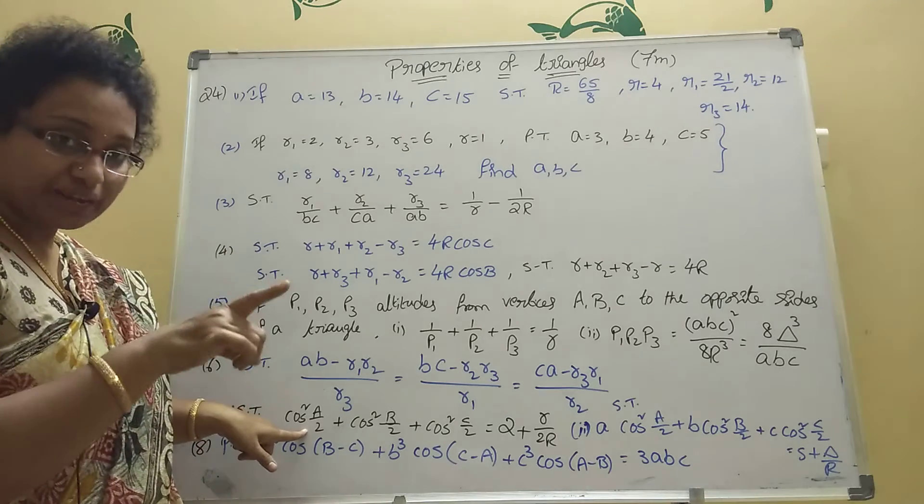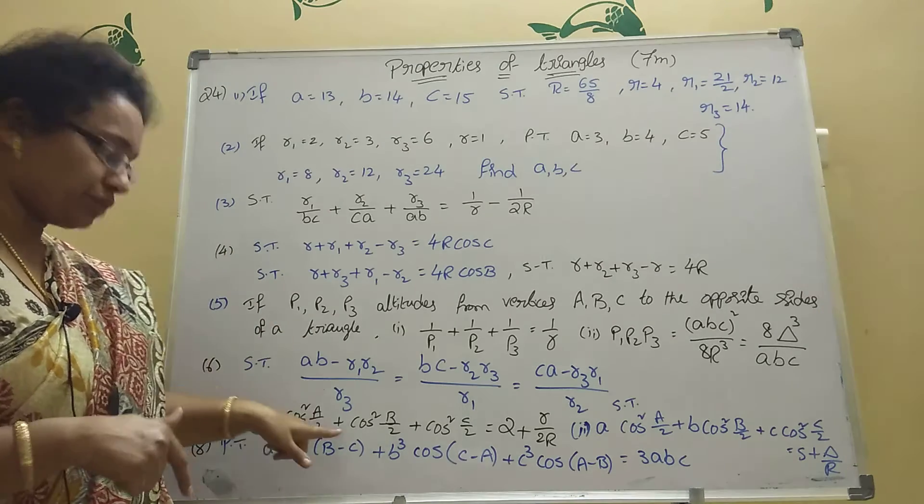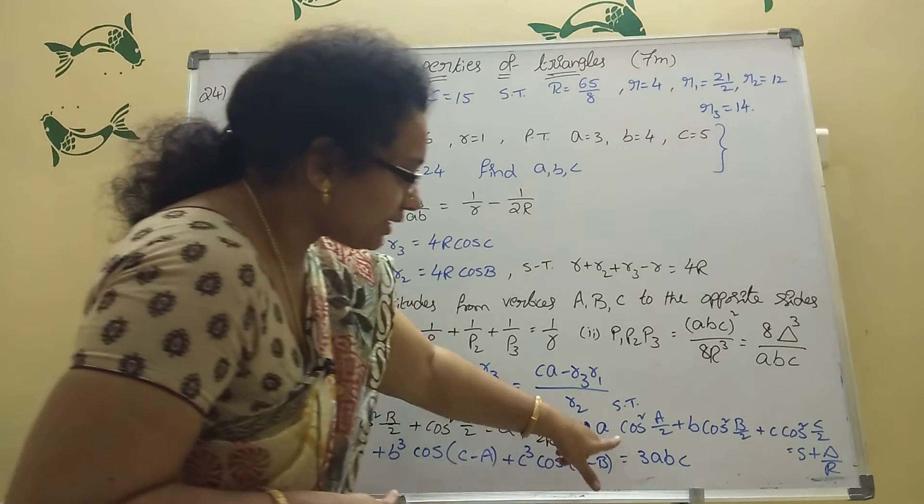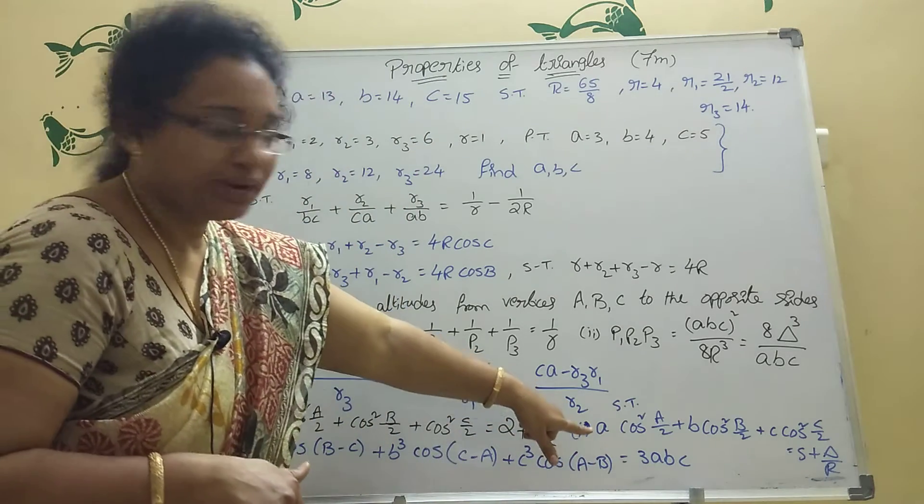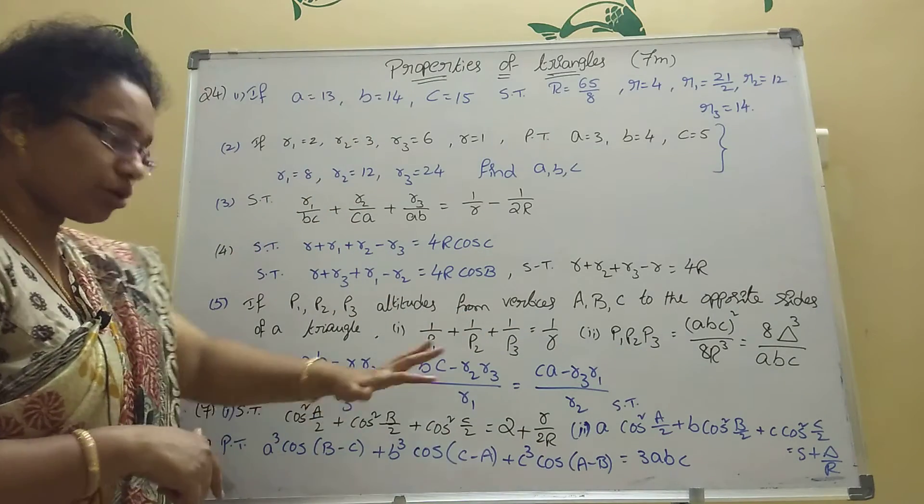1 plus cos A by 2. 1 plus cos A is divided by 2. Use that formula, it will be better. Then here cos square A by 2, then sigma A cos square A by 2. Then split them, you will get a better easily value. This is also model.